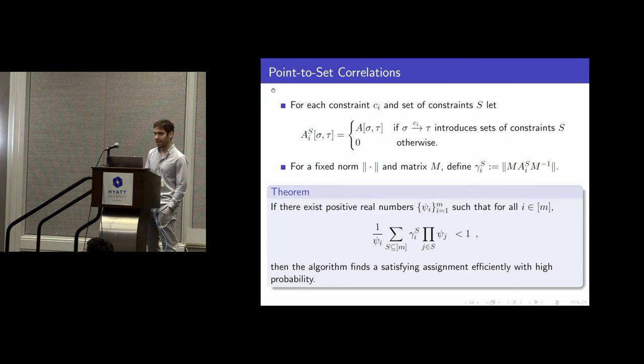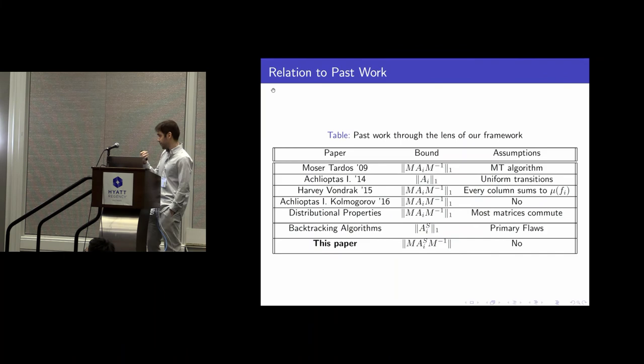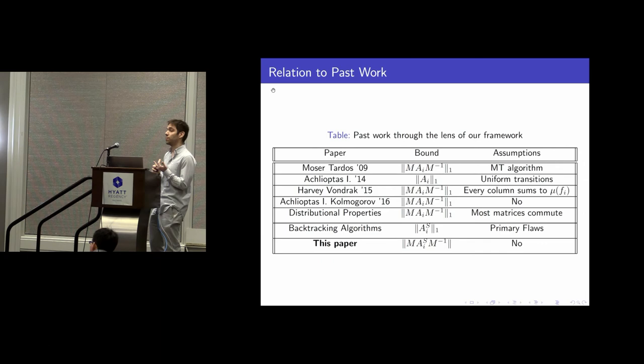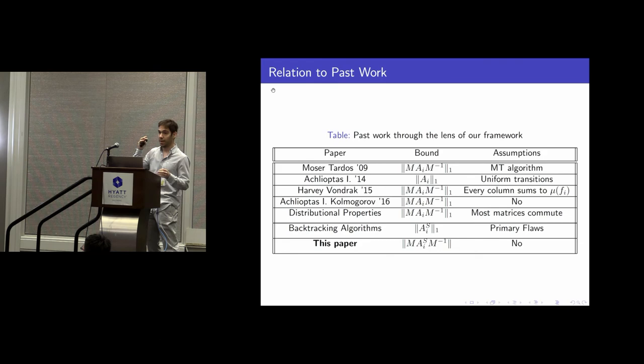We get a general theorem — it's not important to parse it right now. What is important is that many of the past works in this area essentially tried to bound the norm of matrices corresponding to constraints under various assumptions. What we say is: first, you don't need any additional assumptions as long as you can bound the norm — that's all you need. Second, you don't need to look at one matrix per constraint; you can use these more refined matrices. That is the key takeaway.